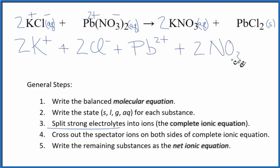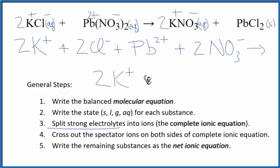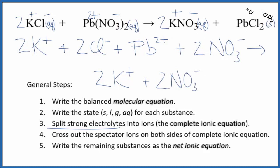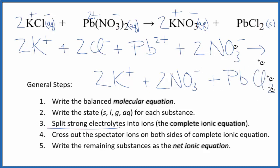So these are the reactants in our complete ionic equation. For the products, we have a plus and a minus, so we have two potassium ions, plus two nitrate ions — the 2 goes to everything. In net ionic equations, we don't split solids up, so we just put PbCl₂. This is our complete ionic equation.